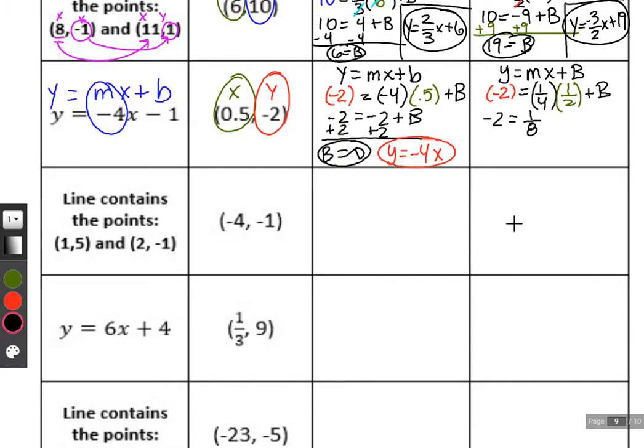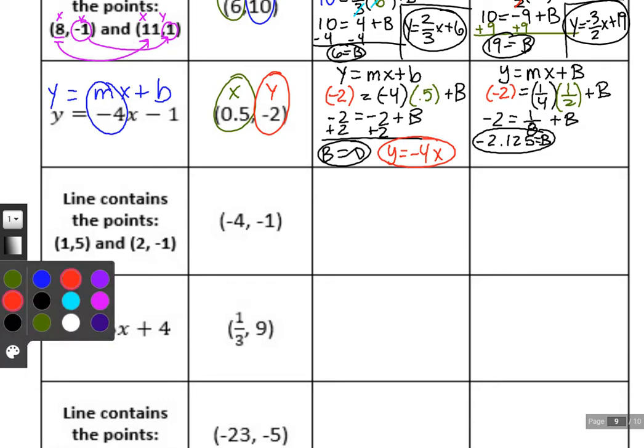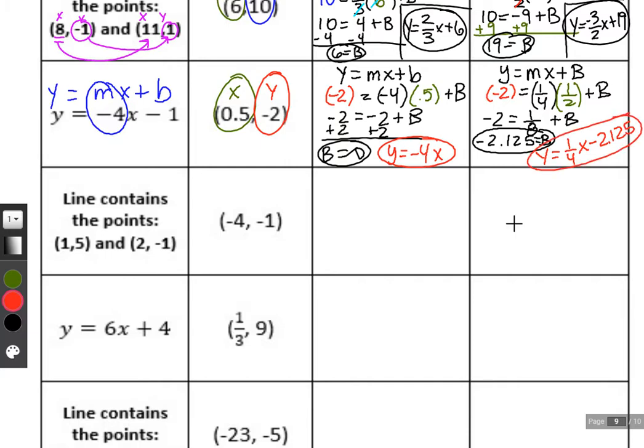In terms of multiplying fractions, you multiply top times top, bottom times bottom. We'll subtract off the eighth. Using our calculator, one eighth is equal to 0.125, and so if we take negative two and subtract 0.125, we end up with negative 2.125. That's going to be our b value, which means our equation is y equals one fourth x minus 2.125. You could write it as a mixed number if you want, two and an eighth.